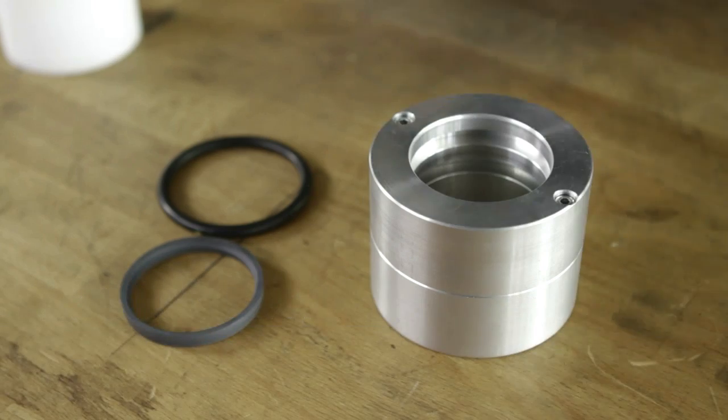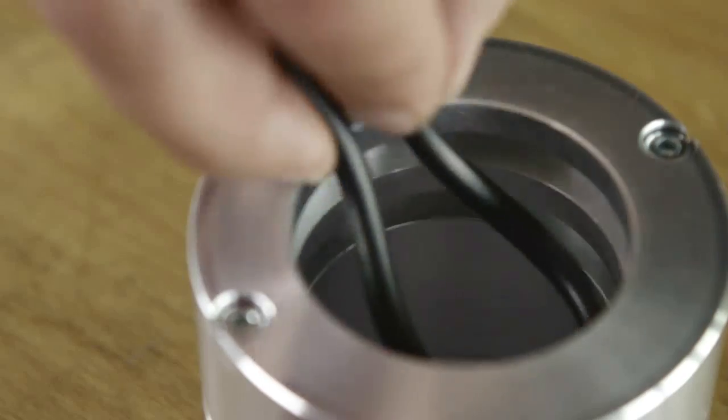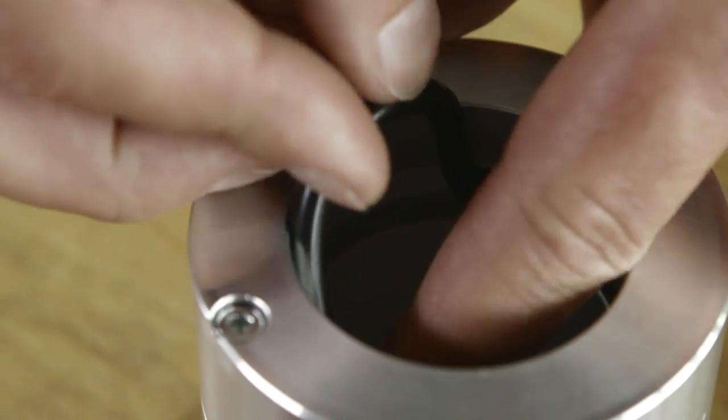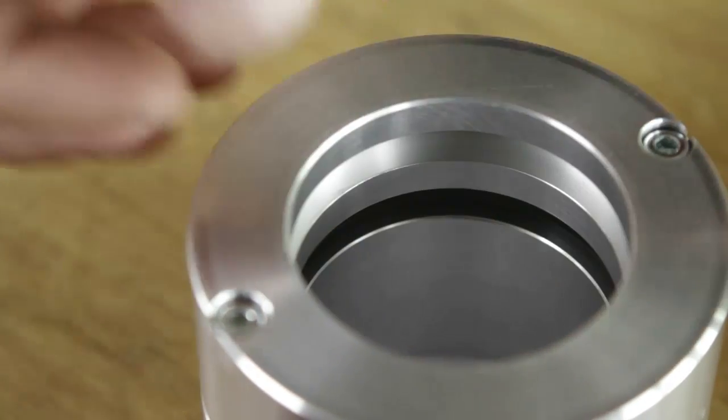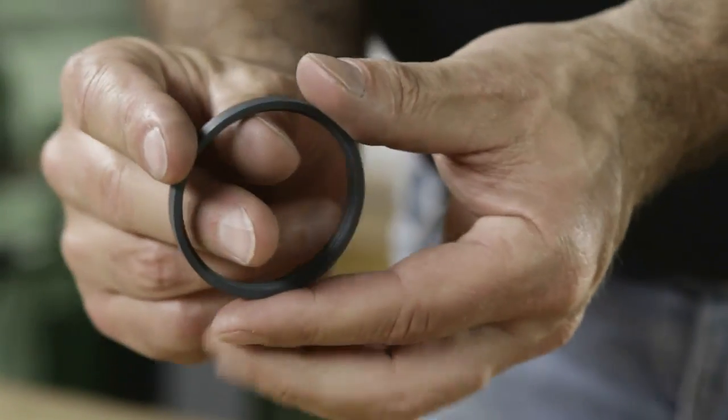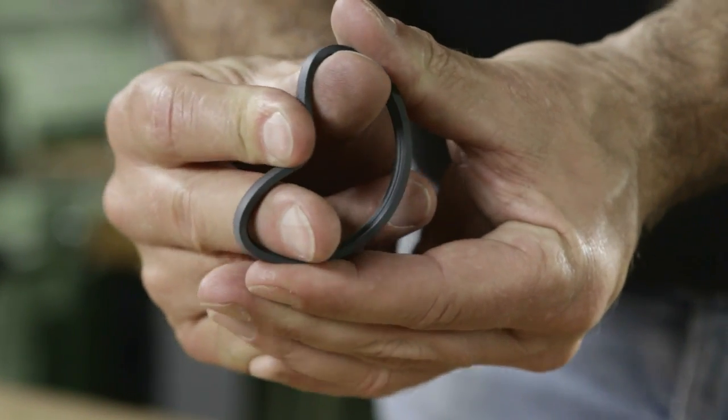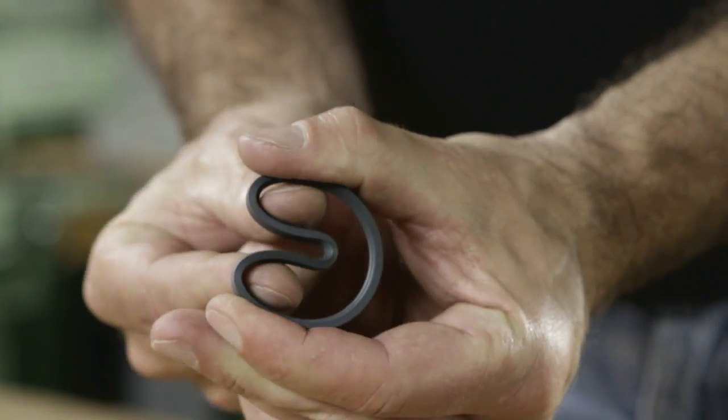If no assembly tools are available, the following installation method is recommended. Install the pre-tensioning element into the groove. Avoid twisting the O-ring. Form the turcon rod seal carefully into a kidney shape by hand. Avoid any sharp bends in the sealing lip.